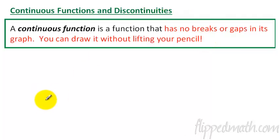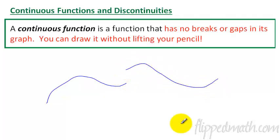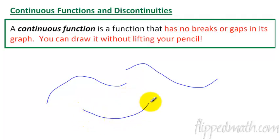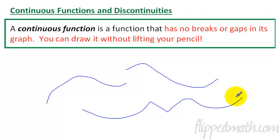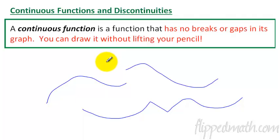So if I was drawing a graph and I had to all of a sudden lift my pencil in order to keep drawing it, then that would not be continuous — that would be discontinuous. But if I can draw it all the way across, even if it has a sharp corner, that's okay. Corners don't matter. It's still continuous as long as I don't have to lift my pen or pencil. That is a continuous function. Now that's an informal definition, kind of like if we were talking to little kids. We're not talking to mathematicians — I'm going to give you a better definition at the end of the lesson.